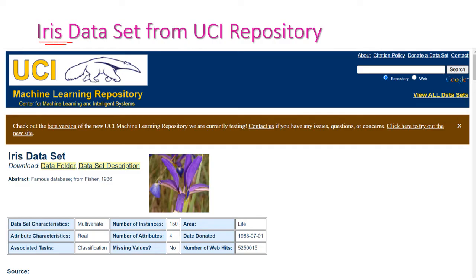For example, let us take the IRIS dataset from the UCI repository. In Google, type UCI repository and select the IRIS dataset, or you can directly type 'IRIS dataset from UCI repository' in Google. You will get this IRIS dataset page. The dataset has 150 records and 4 attributes, with no missing values.